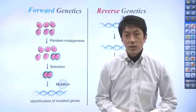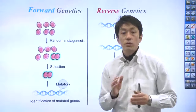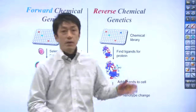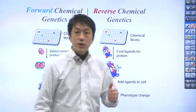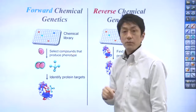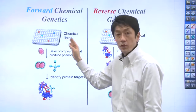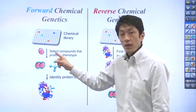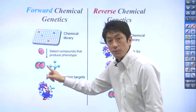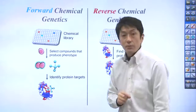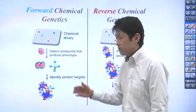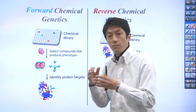Just like genetics, chemical genetics has two approaches: forward chemical genetics and reverse chemical genetics. Chemical genetics uses chemical libraries instead of mutations. Forward chemical genetics starts with screening the chemical library with cells. You add cells into wells of the chemical library, then select the chemical compound that induces a phenotype of interest. For example, this small molecule induces a problem in cell division. The next step is identification of the protein target of this small molecule. Target identification allows us to identify the proteins that play a role in cell division.